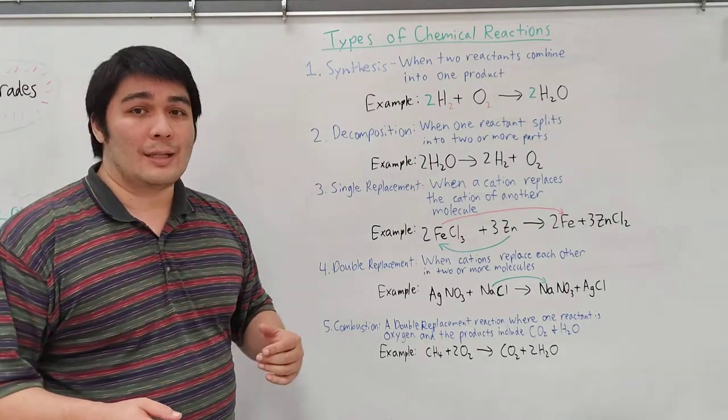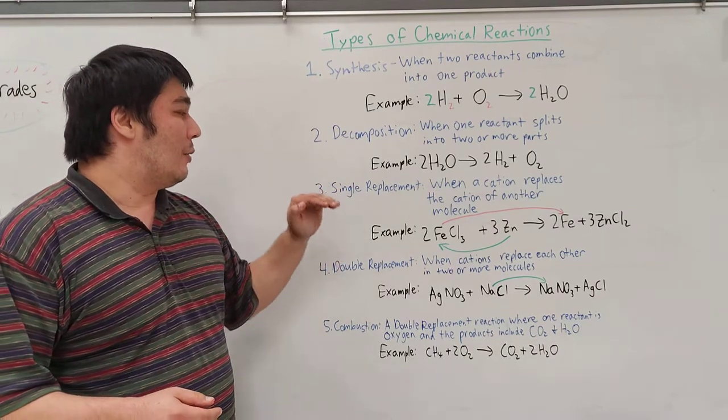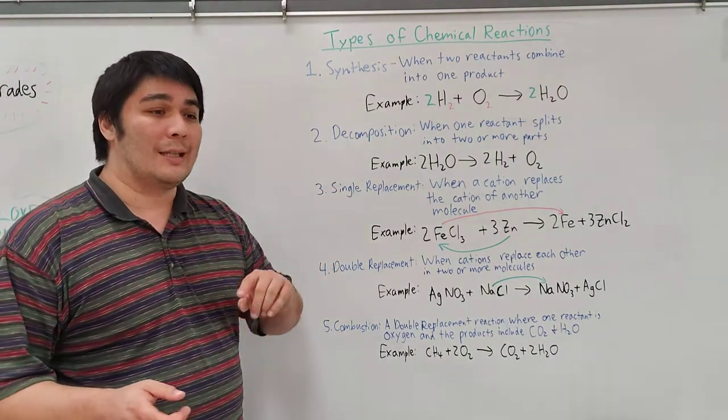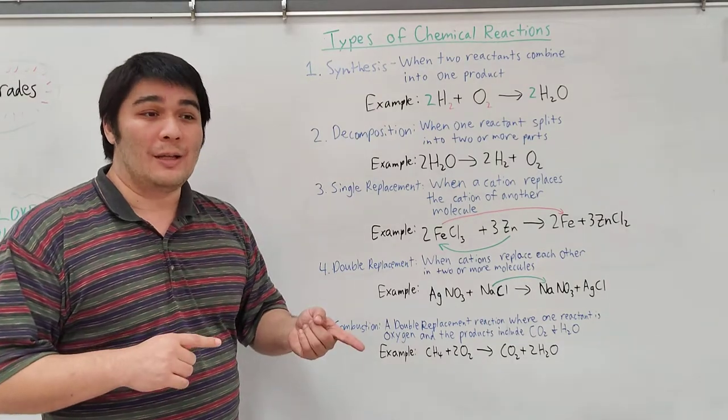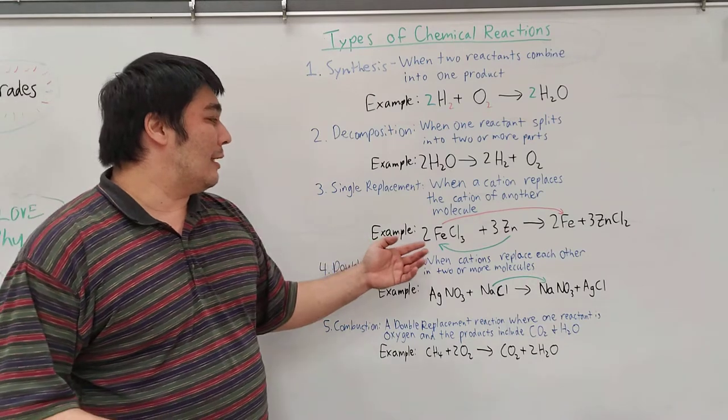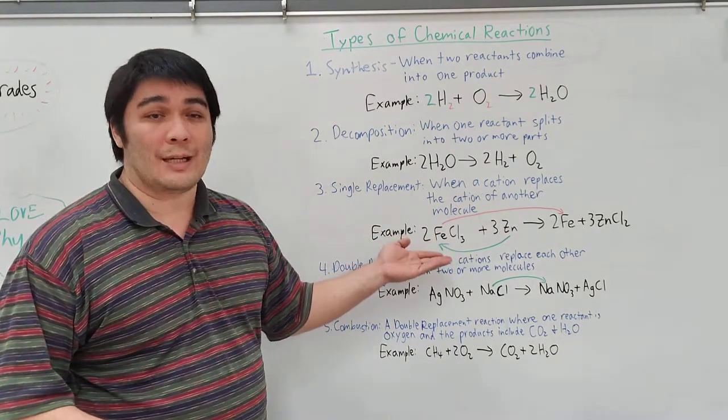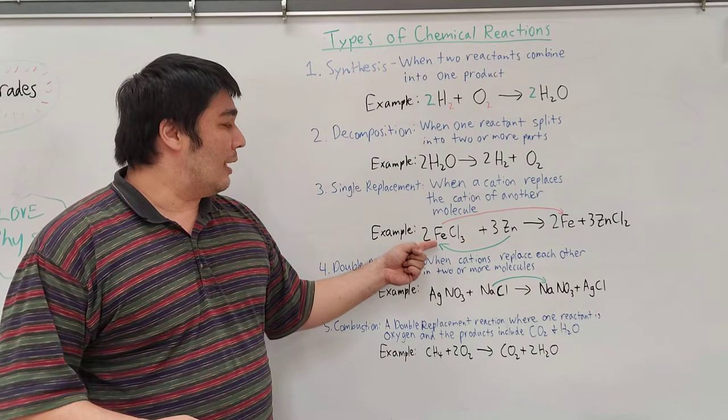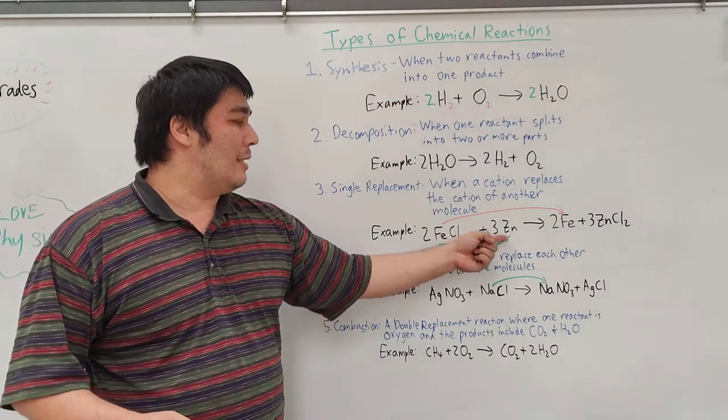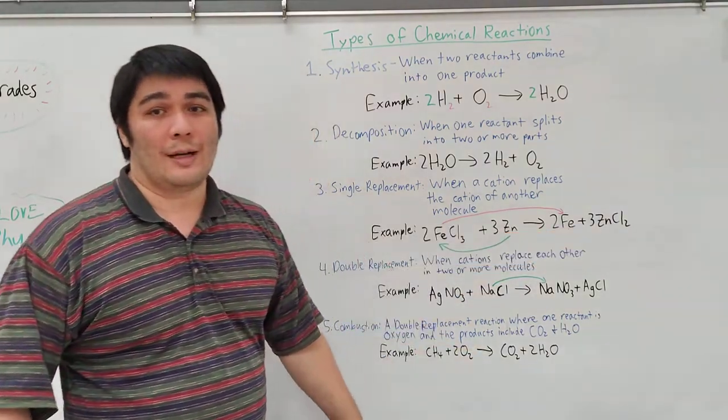Moving on to the third example of types of reaction, it is a single replacement reaction. And this is when a cation replaces the cation of another molecule, and it basically kicks it out. So in this case, it would be something like this. This is one of the examples in the reading. So you've got iron chloride plus three, plus zinc gives you iron at the end with zinc chloride.